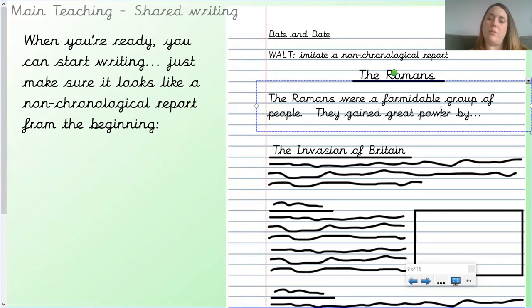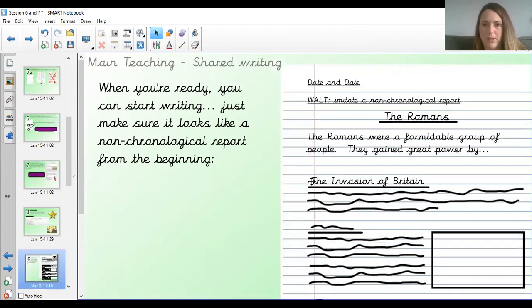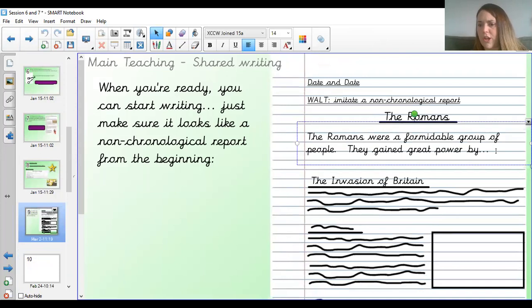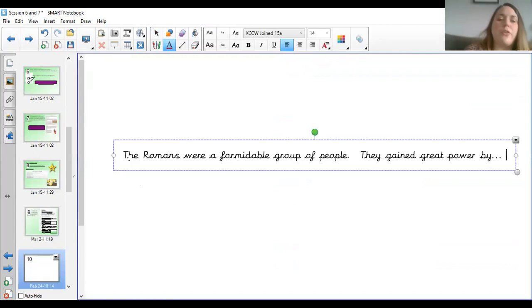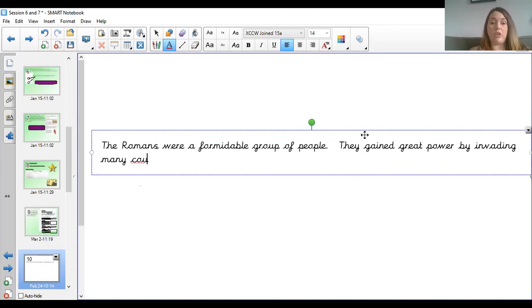I can move the other bits down out of the way. Oopsie daisy. I think it might be easier to just write it on a new slide, actually. So, I'm going to take my introduction. I'm just going to type it into the next slide. Give myself a bit more room. So, the Romans were a formidable group of people. They gained great power by, I'm going to say, how did they get their power? It was by invading countries, wasn't it, and building their empire. They gained great power by invading many countries across Europe, and Africa, and expanding their empire.